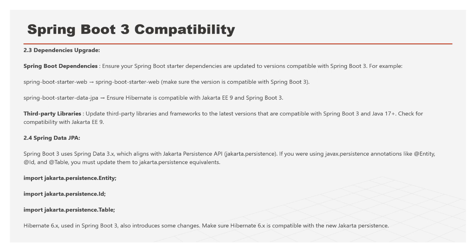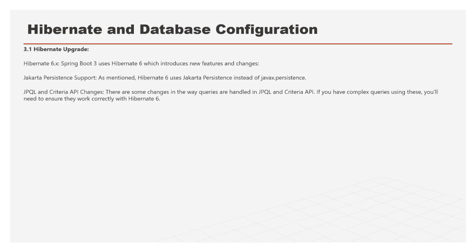For Spring Data JPA, you need to align with the Jakarta Persistence API. Check that annotations like @Entity, @Id, and @Table are using the correct compatible packages. Hibernate 6+ is used and compatible with Spring Boot 3, so once you upgrade Spring Boot you must upgrade Hibernate as well. All Hibernate-related JARs and APIs need to be updated to reflect the changes from Java 8 to Java 17 compatibility.